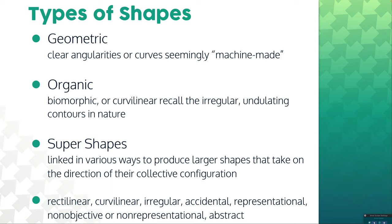The types of shapes: geometric shapes are generally angular, kind of look machine-made. Organic, or biomorphic is another term for that, are usually more curvilinear, can be irregular, and are usually more inspired or derived from nature. And then super shapes, linked in various ways to produce larger shapes - basically larger shapes made up by a variety of other shapes. They can all be rectilinear, curvilinear, irregular, accidental, representational, non-objective, or non-representational, meaning they don't have to actually represent something. They could just be a shape.